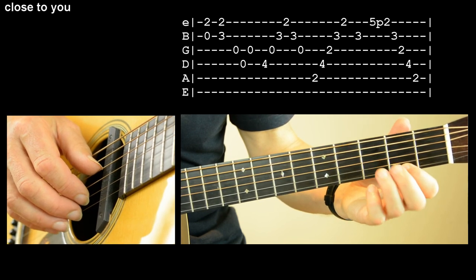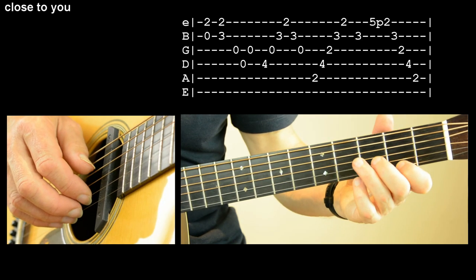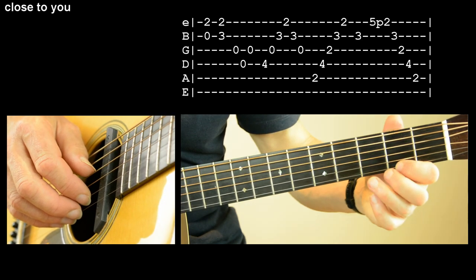Okay so that's the same little bit for two bars in a row so we're going from C to C9 again one two three four and close to you is you can see the tab up above here so it goes two three four.